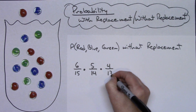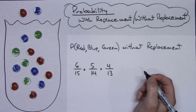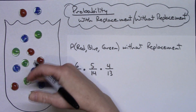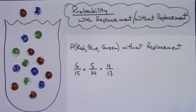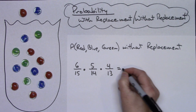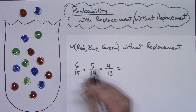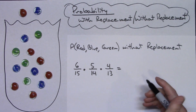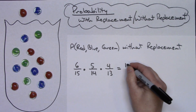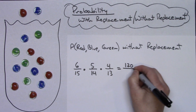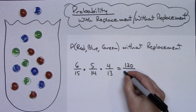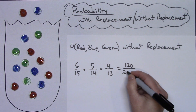Without replacement changes what you have in your bag. Again, straight multiplication — multiply across the top to get 120, and multiplying 15 × 14 × 13 across the bottom gives 2,730.